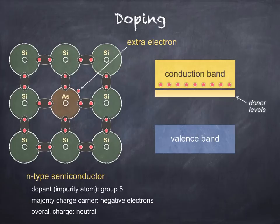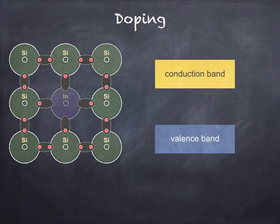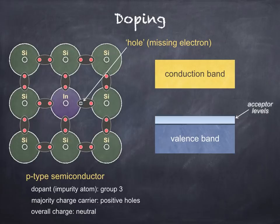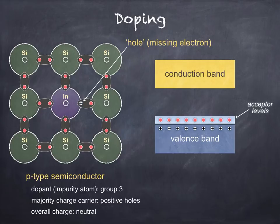Now let's look at p-type semiconductors. This time the impurity atom, or dopant, is from group 3, so only three outer electrons are available for bonding with the surrounding silicon atoms. This results in a positive hole, as shown. The impurity atom in the diagram is indium. The addition of group 3 impurity atoms leads to additional energy levels in the band gap, just above the valence band — these are known as acceptor levels. Electrons in the valence band require very little energy to move to the acceptor levels, leaving behind holes in the valence band. This is where p-type semiconductors get their name, because the majority charge carriers are positive holes. Conduction in a p-type semiconductor is due to the motion of these positive holes within the valence band. Again, p-type semiconductors are electrically neutral, since the impurity atoms have an equal number of electrons and protons.